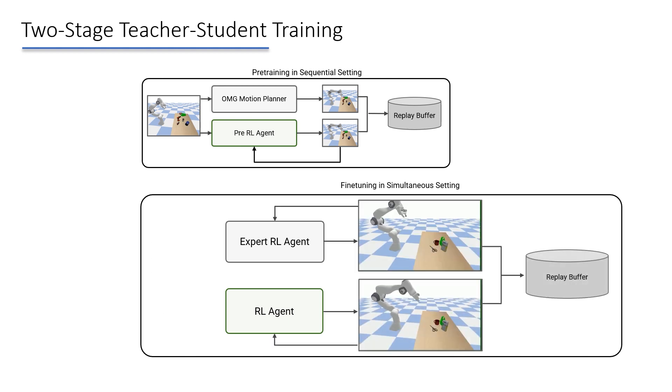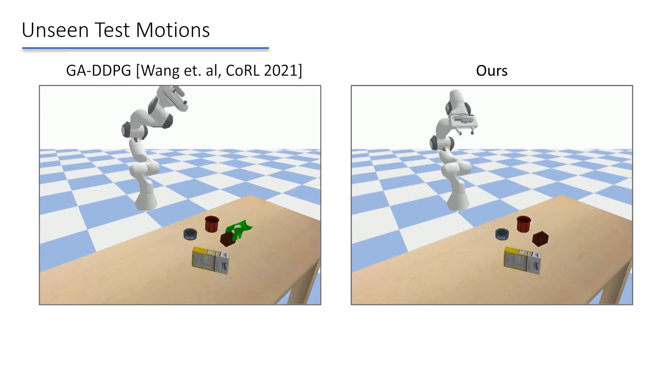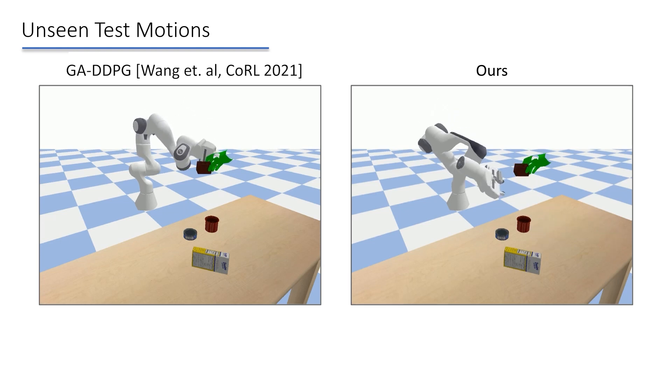We now continue gathering experiences in the same fashion by filling a new replay buffer. We now present qualitative results. Related work cannot react to dynamic movement of the human. On the other hand, our method can react to human movement and avoid collisions.